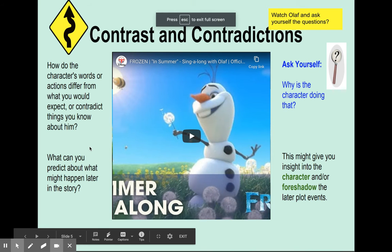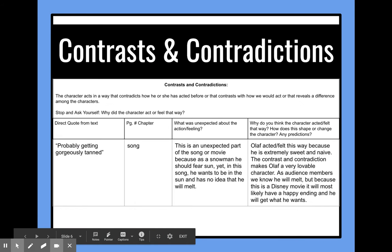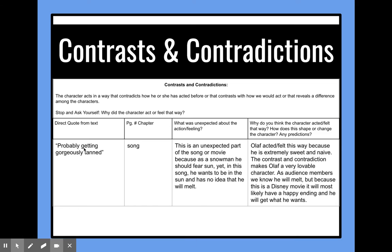We see Olaf, and you're going to go to the next slide. I've put a quote from this song — 'probably getting gorgeously tanned' — along with the page number or chapter, which is the song itself. This graphic organizer helps us think through the contrast and contradiction. We find a direct quote from the text and then explain what was unexpected about this action or feeling. I've written: this is unexpected because as a snowman, he should fear the sun, yet in this song he wants to be in the sun and has no idea that he will melt.